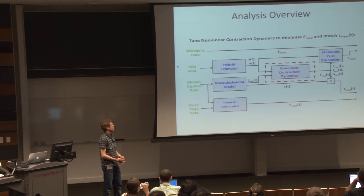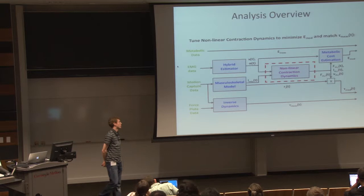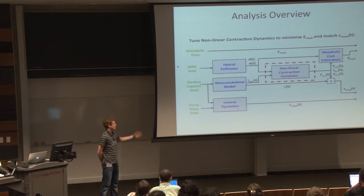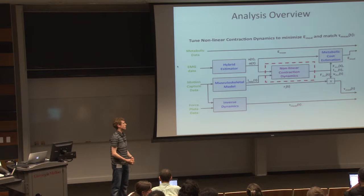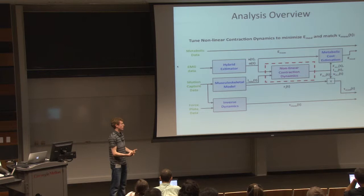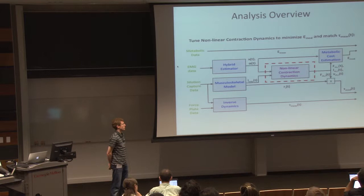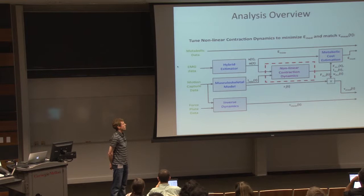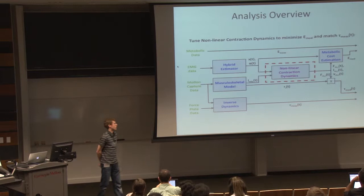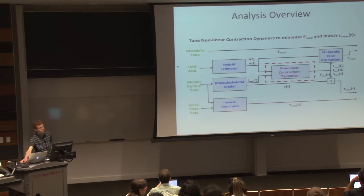For the EMG data, I use it to estimate muscle activation using a hybrid estimator based on a Sanger-Bayesian algorithm and then a shaping filter to get activation. We use motion capture data plugged into a model to get muscle-tendon lengths, moment arms, and net length work. All of this is fed into a model reflecting each muscle in the leg, then fed to a multi-objective optimization which tries to simultaneously minimize the metabolic cost of walking and match the measured torques at the ankle, knee, and hip joints.